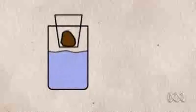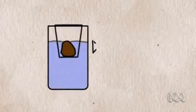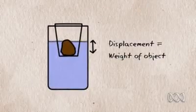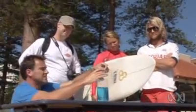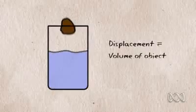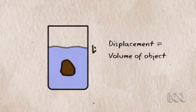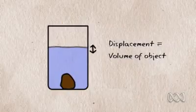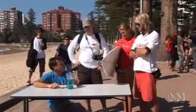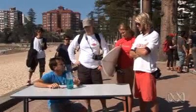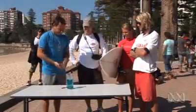What happens is an object that's floating displaces a volume of water that has the same weight as the object, but an object that sinks only displaces its own volume, not its weight worth of water. And so when the boat goes back in, the water level stays down. So there you go.